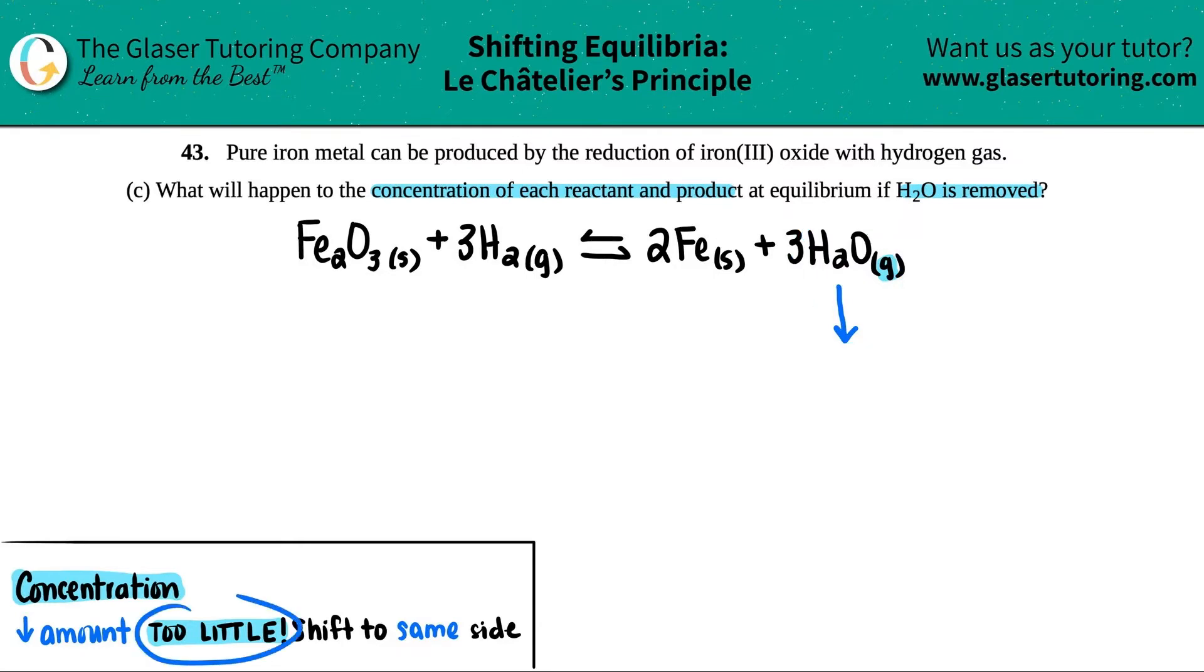That makes sense, right? If you remove H₂O you have way too low of H₂O, so you gotta get it back. How are we going to get this back? Are we going to go in the forward reaction producing the products, or in the reverse reaction producing the reactants?